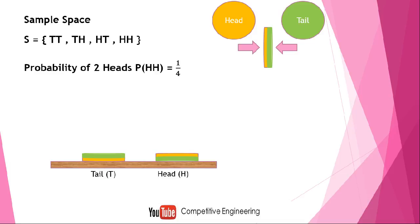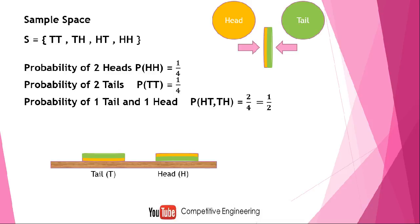The probability of getting two tails is also 1/4, because only one TT is in the sample space. The probability of getting one tail and one head is 2/4, which equals 1/2, because it can be either TH or HT — both satisfy the condition of one tail and one head. The concept of two coins is now clear.